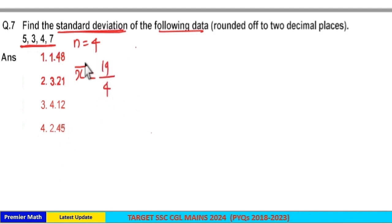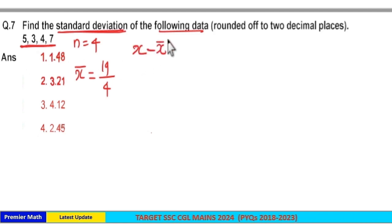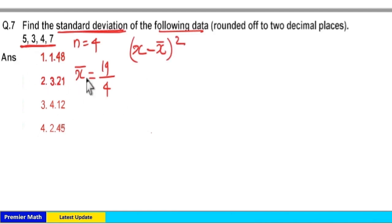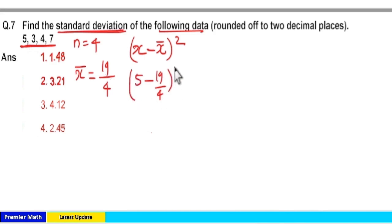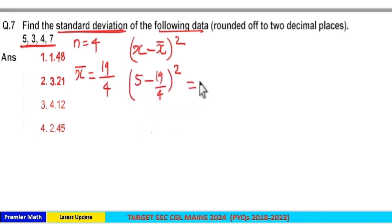Take the difference between each of the given samples and the mean, then square it. For 5: 5 minus 19 by 4, take the difference then square it. 4 into 5 is 20, 20 minus 19 is 1, so 1 by 4 squared is equal to 1 by 16.